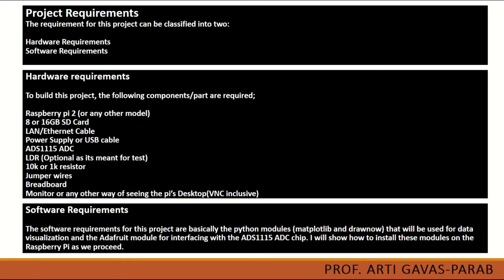Here are the project requirements, divided into two: hardware requirements and software requirements. In hardware requirements, we need a Raspberry Pi microcontroller, a 16 GB SD card, a LAN or Ethernet cable, a power supply, and an analog to digital converter. The component name is ADS1115 ADC.